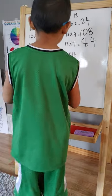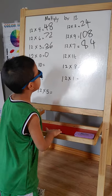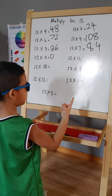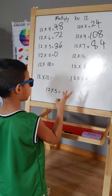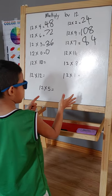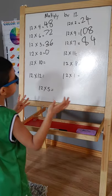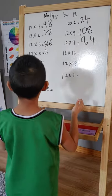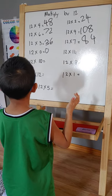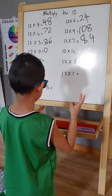Twelve times eleven: hey, eleven, twenty-two, twelve times eleven, thirty-three, forty-four, fifty-five, sixty-six, seventy-seven, eighty-eight, ninety-nine, and a hundred and ten, a hundred and twenty-one, a hundred and thirty-two.